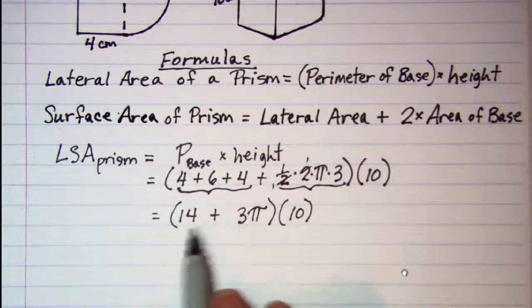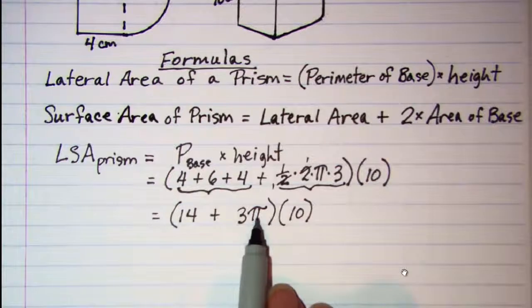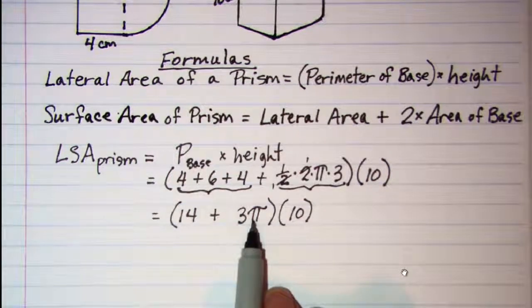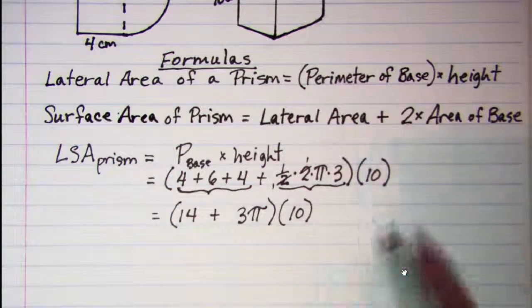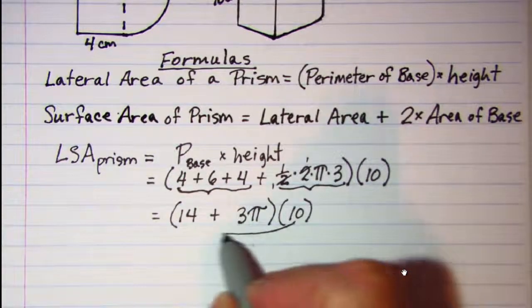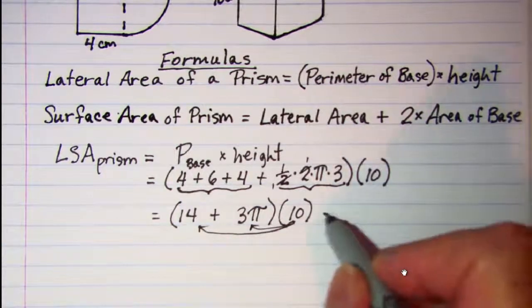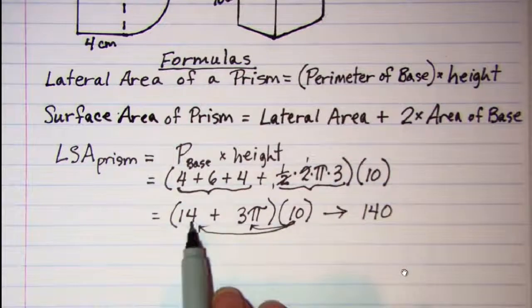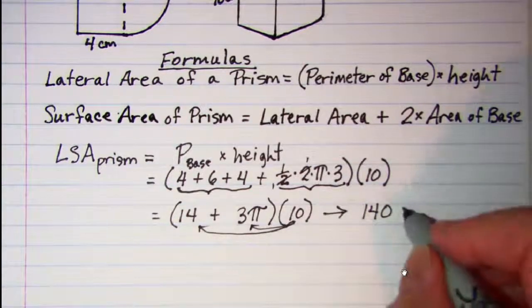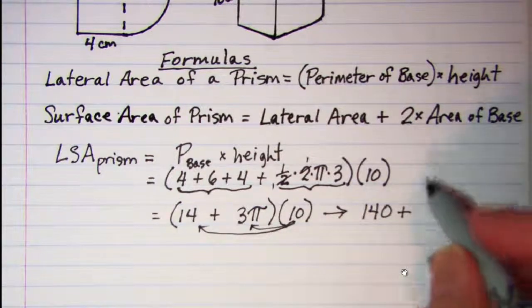Now we can't combine rational and irrational numbers together so we are going to have to leave this written as a binomial. But we can distribute our 10. If we multiply our 10 through the binomial we have 140, that is 14 times 10, plus 3π times 10 is 30π.